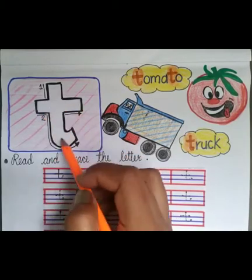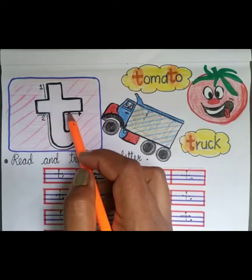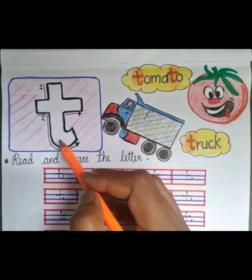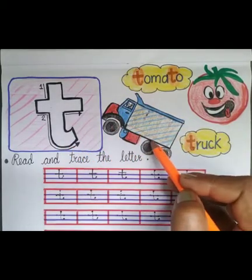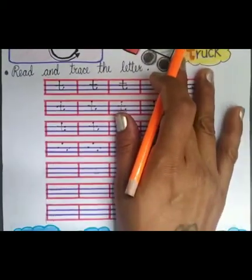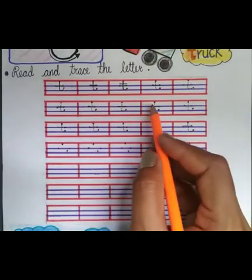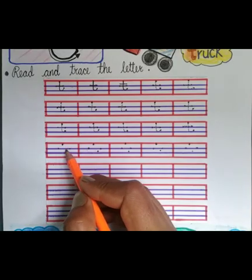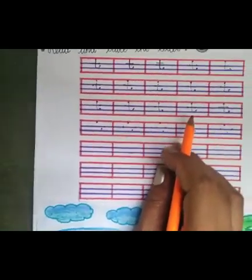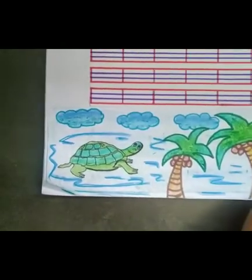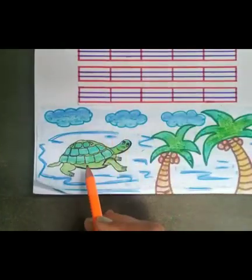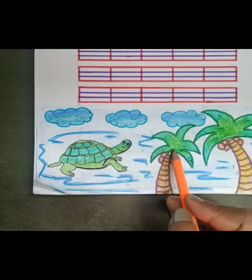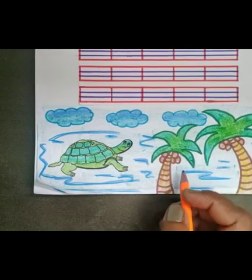Now in this worksheet, this is small T. First you have to color the small letter T. T for tomato, T for truck. Then read and trace the small letter T, then join the dots. T for turtle, T for tree — very good!